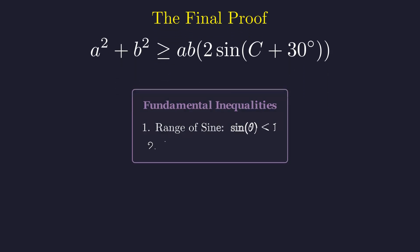To seal the deal, we need two fundamental mathematical truths. First, sine never exceeds one. It's bounded above. Second, the AM-GM inequality tells us that A squared plus B squared is always at least 2AB. These are the building blocks that make our proof rock solid.